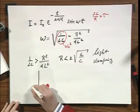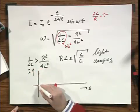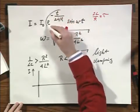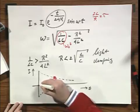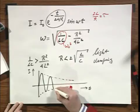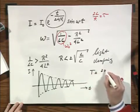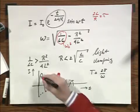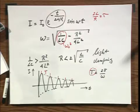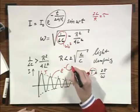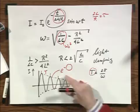What does the current look like as a function of time? We started at I equals zero at t equals zero. The exponential decay acts as an envelope that pinches the current off, making it die down. The zero crossings are equally spaced with period T equals 2π/ω. These periods remain constant, and the exponential curve is the envelope which squeezes down the current.